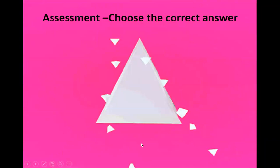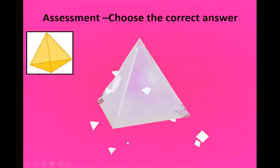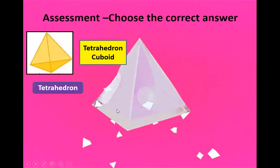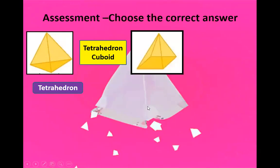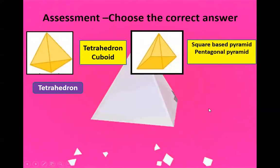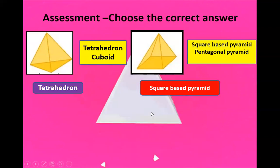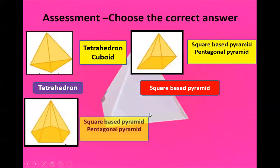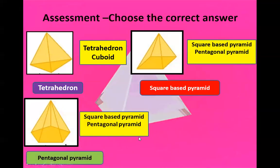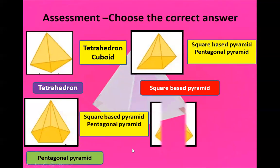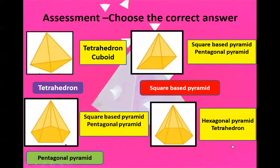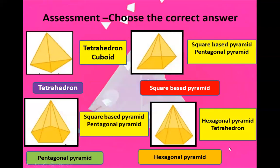Assessment — choose the correct answer. First, is this a tetrahedron or a cuboid? Yes, it's a tetrahedron. Second, is this a square-based pyramid or a pentagonal pyramid? Correct, it's a square-based pyramid. Is this a square-based pyramid or a pentagonal pyramid? Yes, it's a pentagonal pyramid. Last one — is it a hexagonal pyramid or a tetrahedron? Yes, it's a hexagonal pyramid.